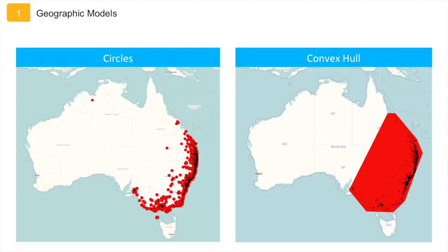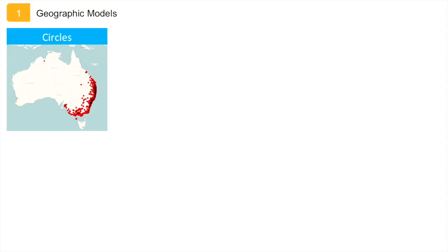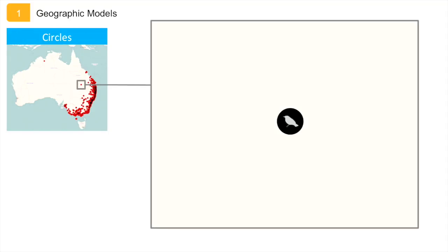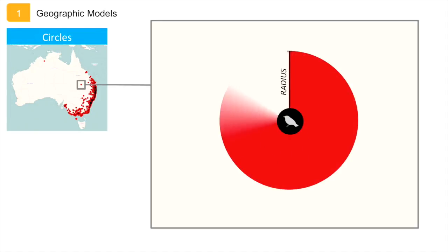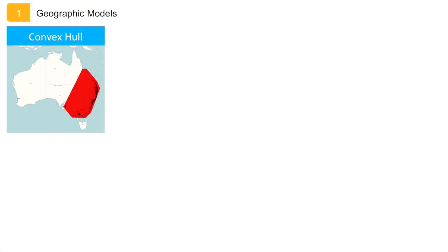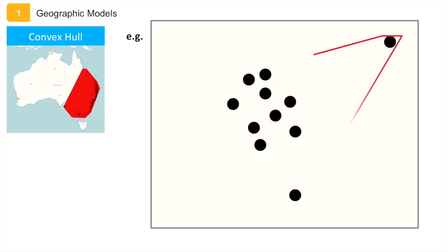Two examples of geographical models are circles and convex hull. The circles model predicts that a species can be present within a circle of some given radius around any observed occurrence point. The convex hull model draws a spatial convex hull around the set of occurrence points. This is the smallest polygon that you can draw around the points of occurrences, enclosing all points, but where all the angles of the polygon boundary are outwardly convex.